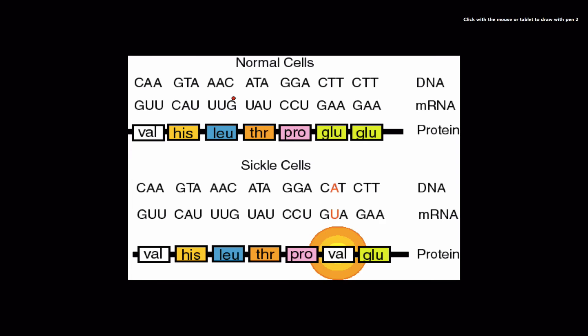Here's a normal cell. Okay, and this normal cell has this sequence of DNA triplets. CAA, GTA, AAC, and so on. These get transcribed to messenger RNA, if you remember that. Here's the messenger RNA sequence. And of course the messenger RNA sequence gets translated into a sequence of amino acids. And the normal cell sequence. And the hemoglobin gene I think is, you know, 120 or 160 amino acids long. So this is just one short little part of it. But the normal gene goes valine, histidine, leucine, threonine, proline, glutamine, glutamine.